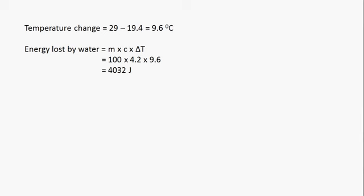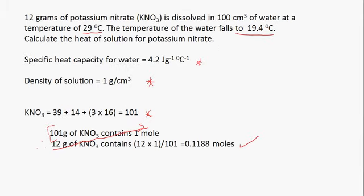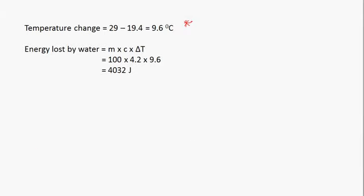We need to find the temperature change: 29 minus 19.4 gives 9.6 degrees Celsius. The energy absorbed by the solution is equal to mcΔT. The mass of water was 100 cm³, so 100 grams. With specific heat capacity 4.2 and temperature change 9.6, we multiply using our calculator and get 4,032 joules.